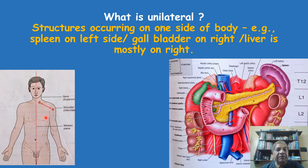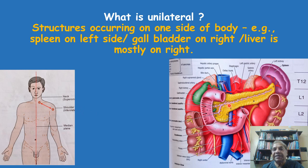In relation to this median plane, if any structure occurs on the right side or the left side only — either present on the right side or only on the left side — then this structure is called unilateral. For example, in this second diagram, this violet color structure is the spleen, which is present only on the left side of the body. Thus, the spleen is a unilateral organ.